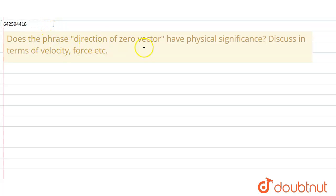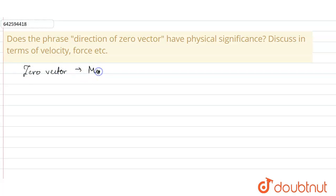Our question is: does the phrase 'direction of zero vector' have physical significance? Discuss in terms of velocity and force. So first of all, what is a zero vector? A zero vector is a vector having magnitude of zero. The vector is called a zero vector.